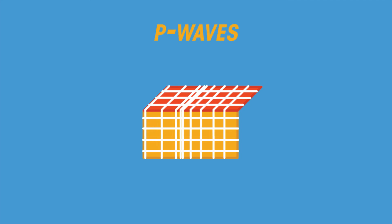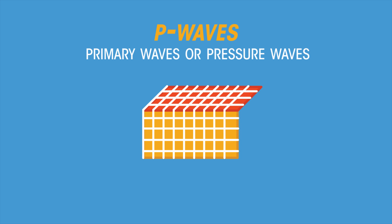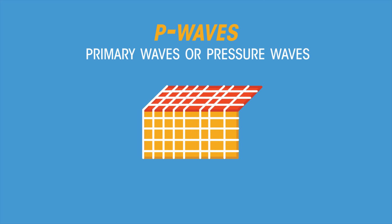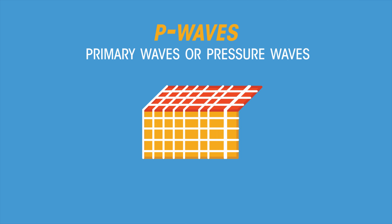P-waves. These waves travel the fastest and are called primary waves or pressure waves, as they arrive at a distant location first. These waves compress and stretch the rocks as they spread out. P-waves pass easily through both solids, like rock, and liquids, like magma.